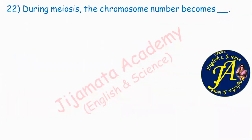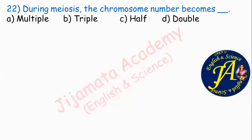During meiosis, the chromosome number becomes dash. Options are multiple, triple, half, double. Meiosis is also called reductional division. During meiosis, the chromosome number becomes half — option C: reduce to half. Diploid cells produce haploid cells.